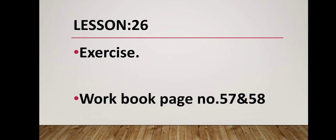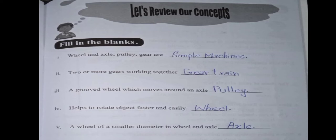So let's start. Open your workbooks at page 57. This one is page 57 of workbooks and here we have the answers. Number 1 is wheel and axle, pulley, gear are definitely these are simple machines.